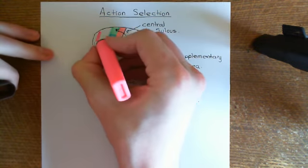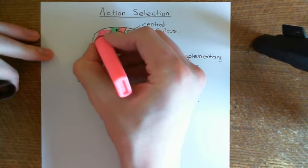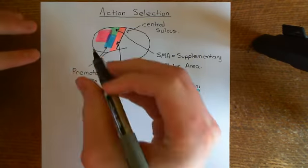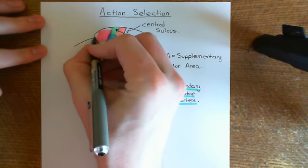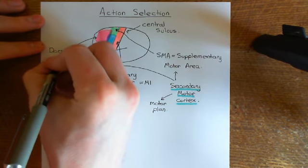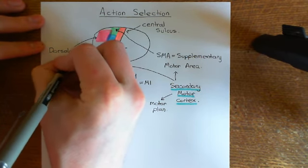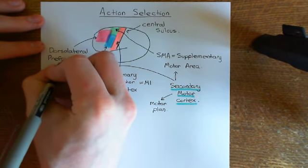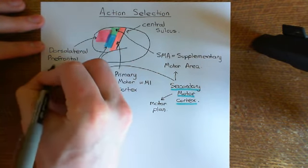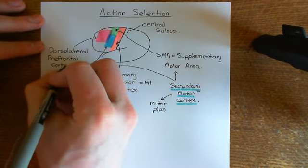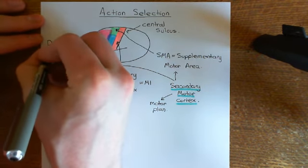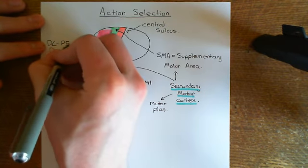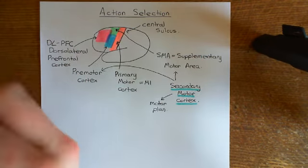This area in front of the secondary motor cortex is what's known as the dorsolateral prefrontal cortex. For short, the dorsolateral prefrontal cortex is often abbreviated to DLPFC — DL for dorsolateral, and PFC for prefrontal cortex.